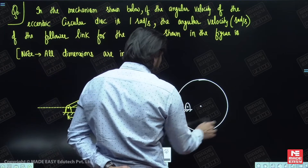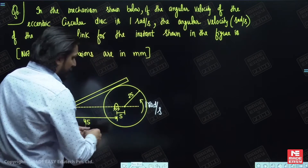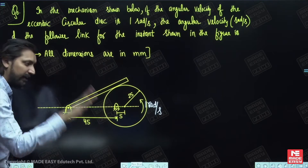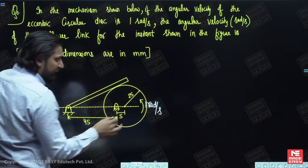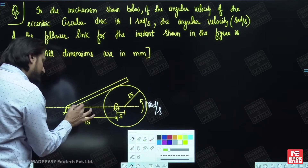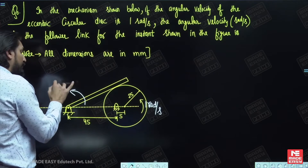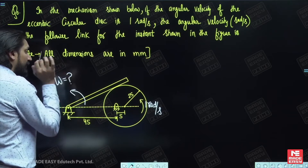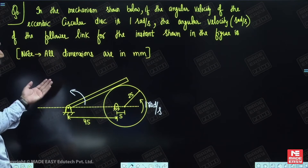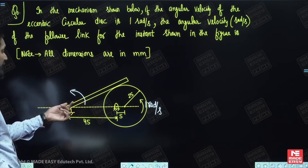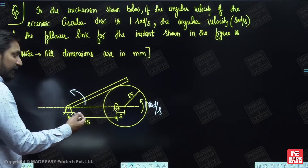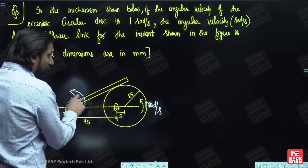When this cam is rotating, this follower is oscillating. At the instant when the angular velocity of the cam is 1 radian per second, for sure this follower will rotate in this sense only — but with what omega? That is what is being asked. The angular velocity of the eccentric circular disc is 1 radian per second, and the angular velocity of this follower is asked.